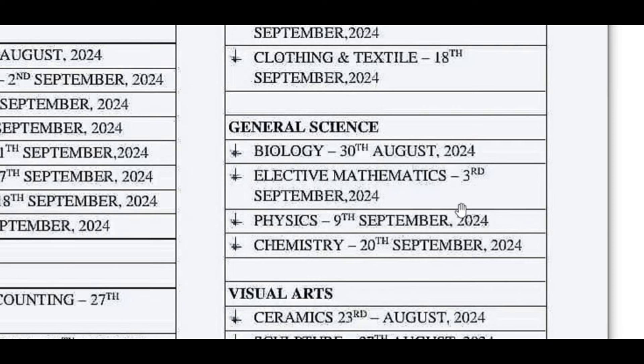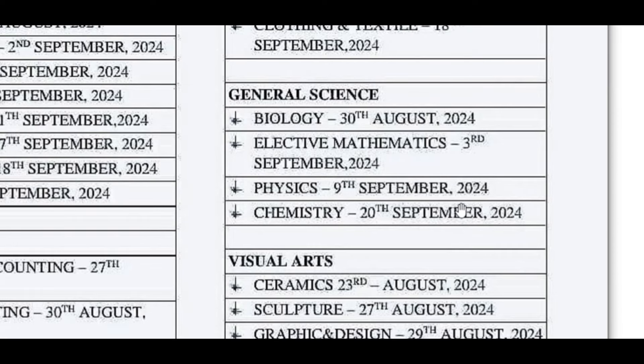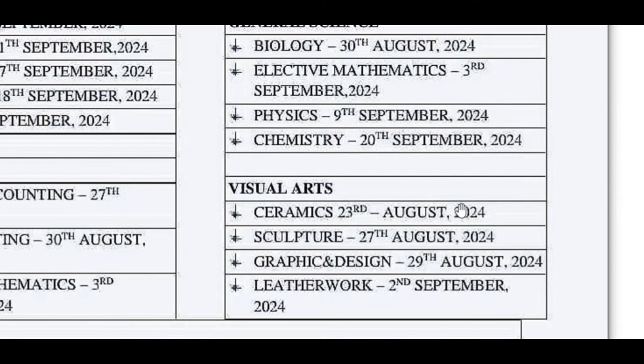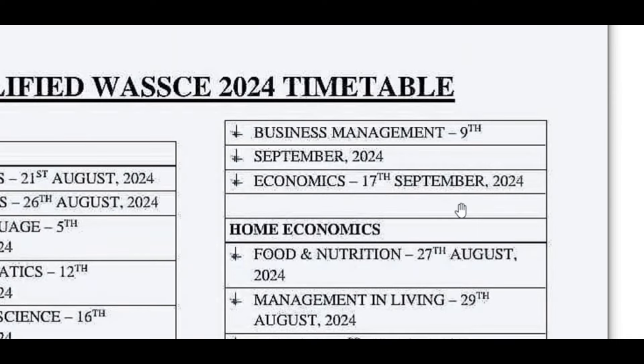For General Science students, the theory papers are: Biology — 30th August 2024; Elective Mathematics — 3rd September 2024; Physics — 9th September 2024; Chemistry — 20th September 2024. Visual Arts subjects: Ceramics — 23rd August 2024; Sculpture — 27th August 2024; Graphic Design — 29th August 2024; Leatherwork — 2nd September 2024. These are the combined theory papers.